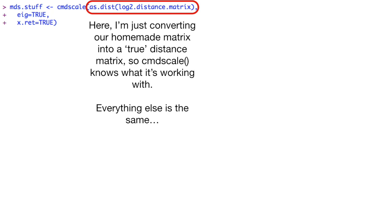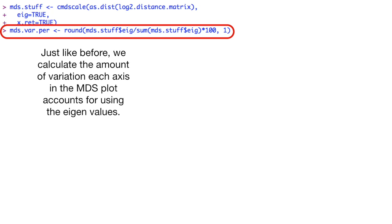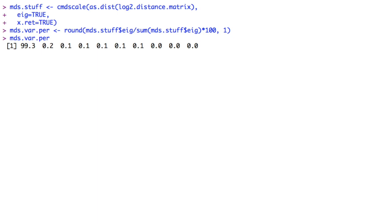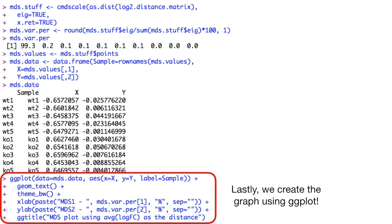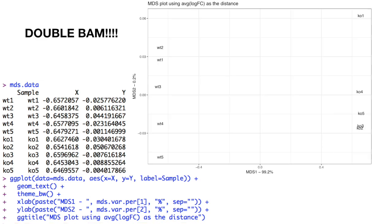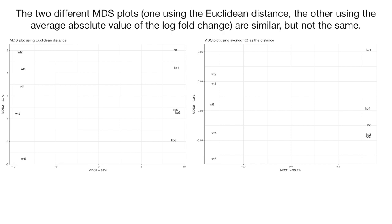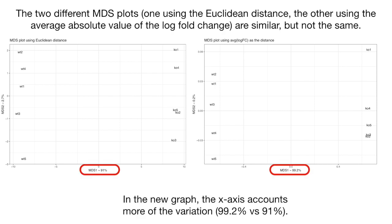Everything else is the same. Just like before, we calculate the amount of variation each axis in the MDS plot accounts for using the eigenvalues. And again, just like before, we format the data for ggplot. Lastly, we create the graph using ggplot. Double bam! The two different MDS plots — one using the Euclidean distance and the other using the average of the absolute value of the log fold change — are similar, but not the same. In the new graph, the x-axis accounts for more of the variation: 99.2% versus 91%. Hooray!